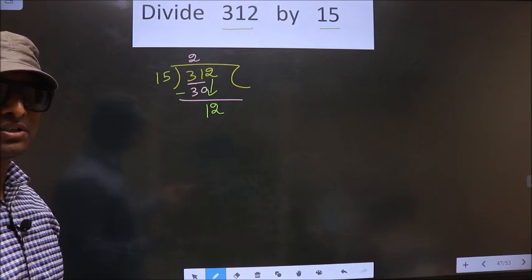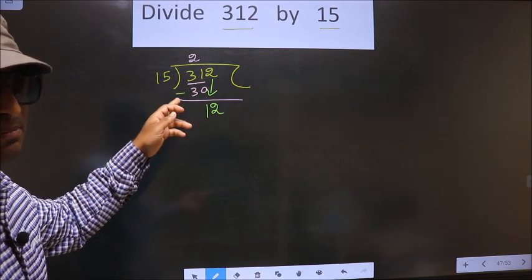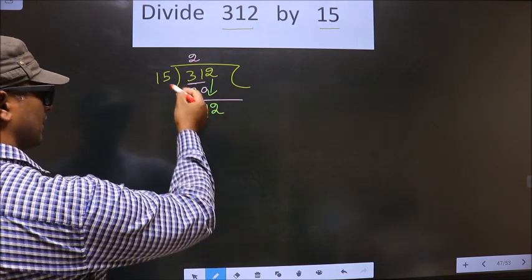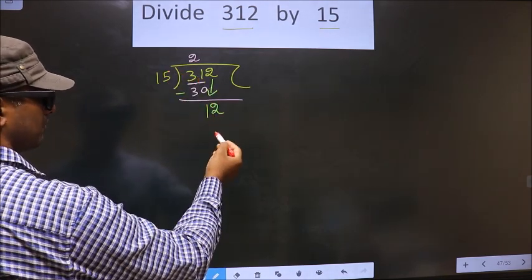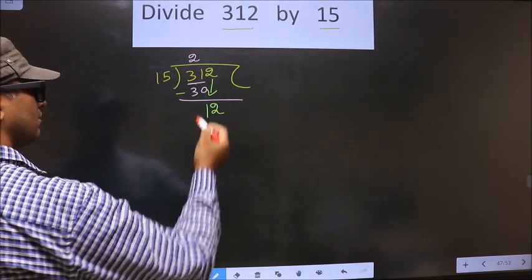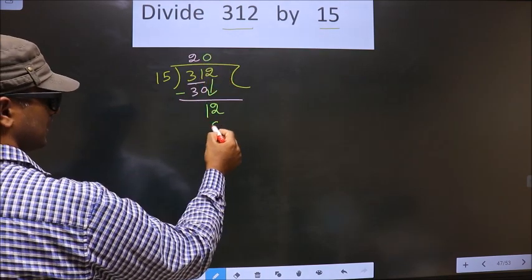Instead, what you should think of is to this number, what should you multiply to get a number here? If we multiply by 1, we get 15 here. But 15 is larger than 12. So what we do is we multiply by 0. So 15 into 0 is 0.